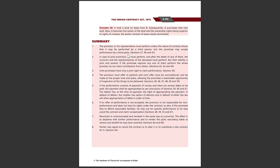In case of joint promissors, all must perform, and after the death of any of them, the survivors and the legal representatives of the deceased must perform. Agar joint promissors ka contract hai toh saare promissors milkar perform karenge. Agar kisi ki death ho jati hai toh uska legal representative aur surviving partners perform karenge. But their liability is joint and several.